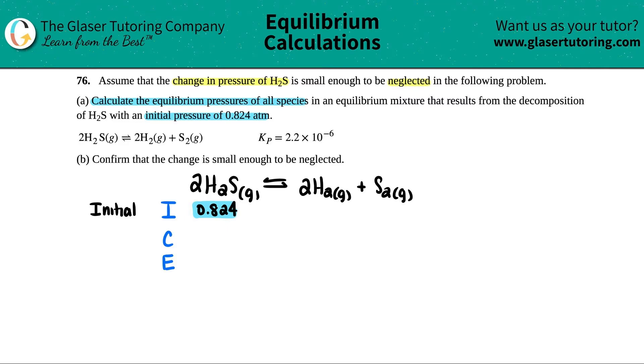Now, the question is, what are the initial pressures for H2 and S2? Did they give me any of that information? No. So we can assume that since we only started with H2S, we did not start with H2 and S2. So these have to be 0. Pretty simple enough.